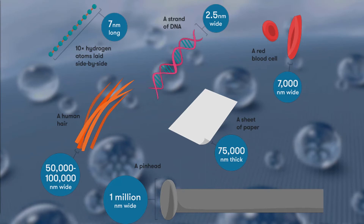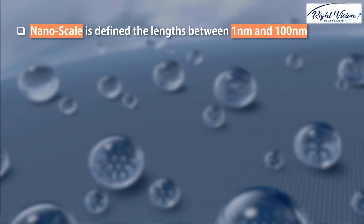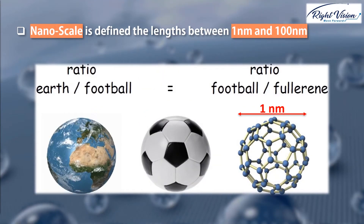Let's put it in another way. We all have some sense about the dimensions of daily objects, right? Like a glass, like a ball. For the sake of comparison, the ratio of Earth to a ball is almost equal to the ratio of that ball to some nanoparticles like fullerene.